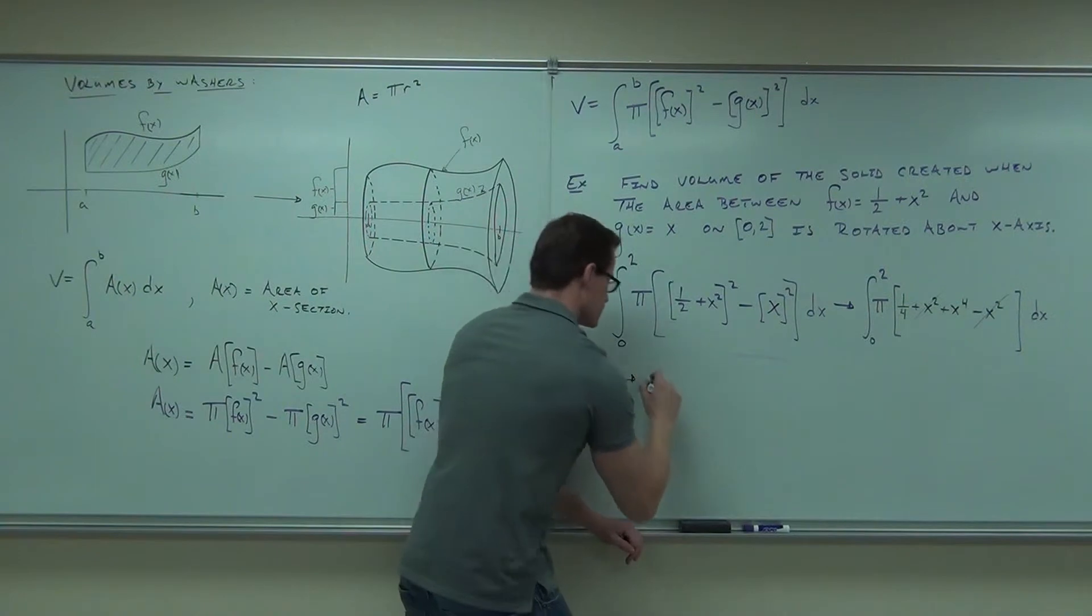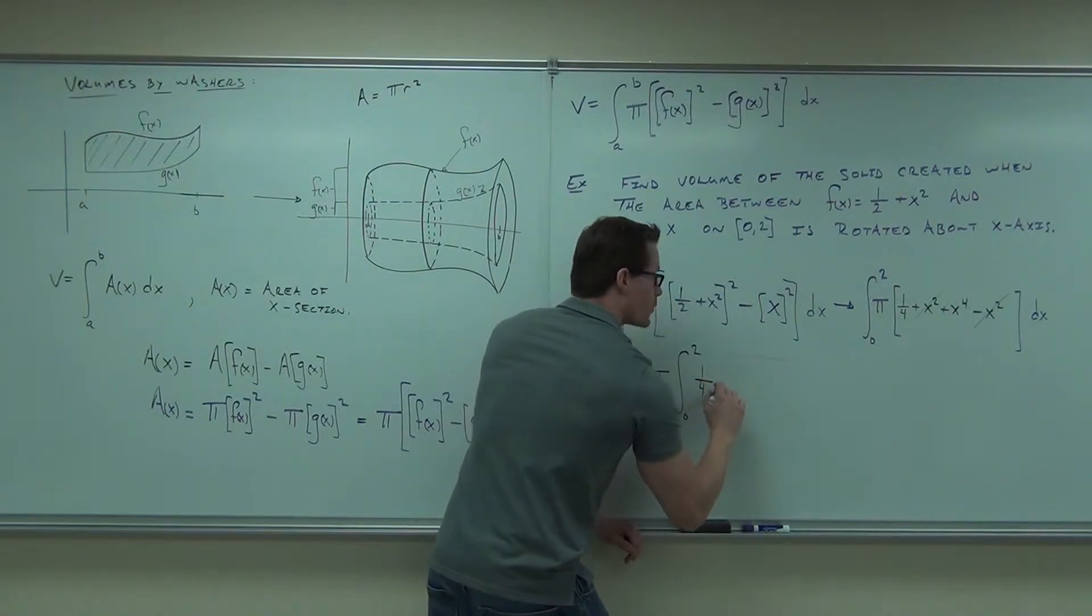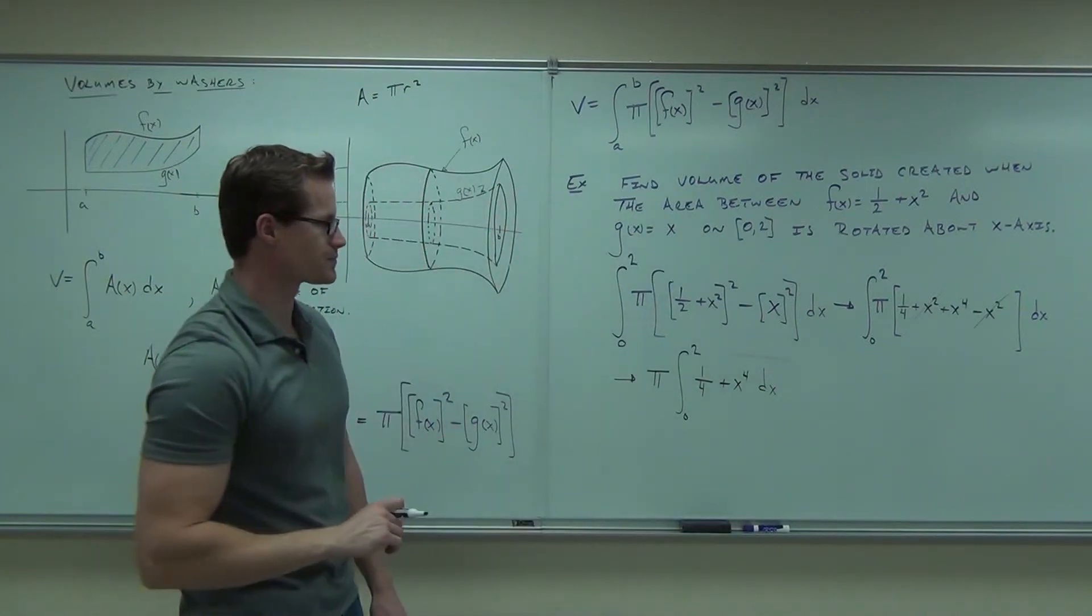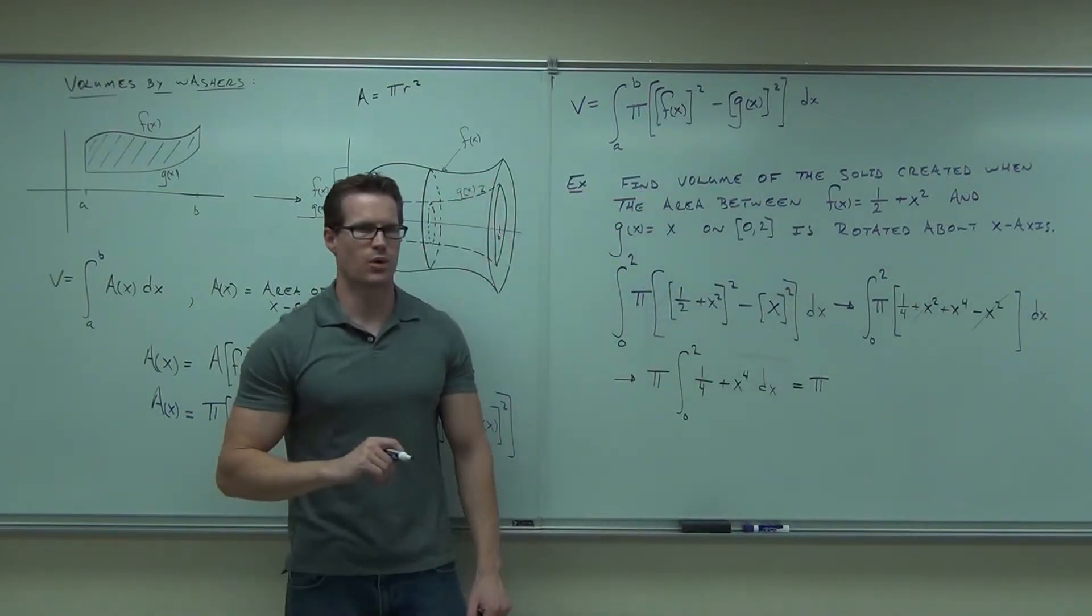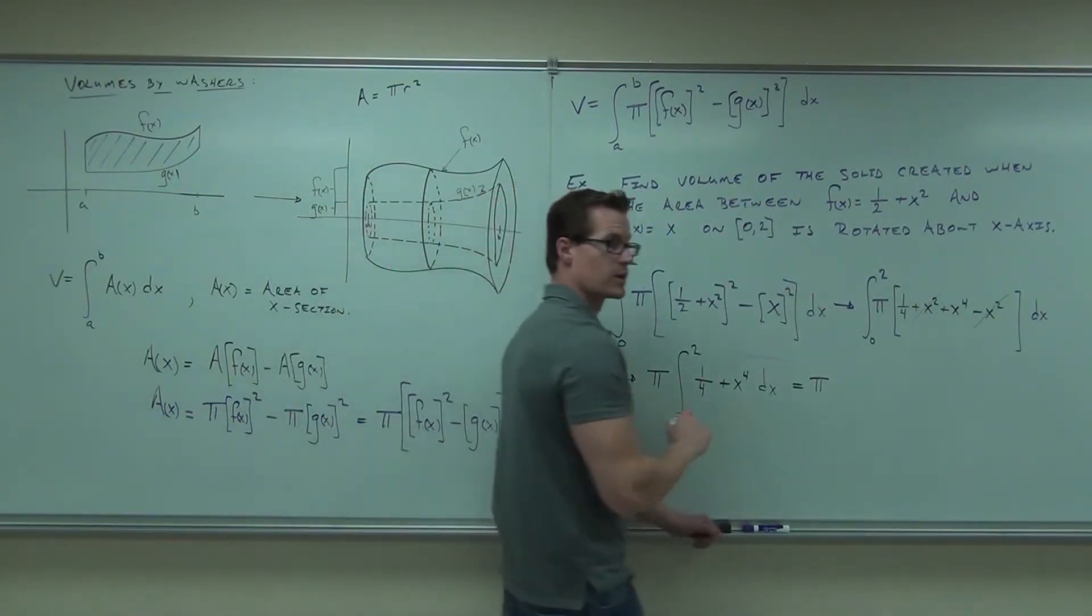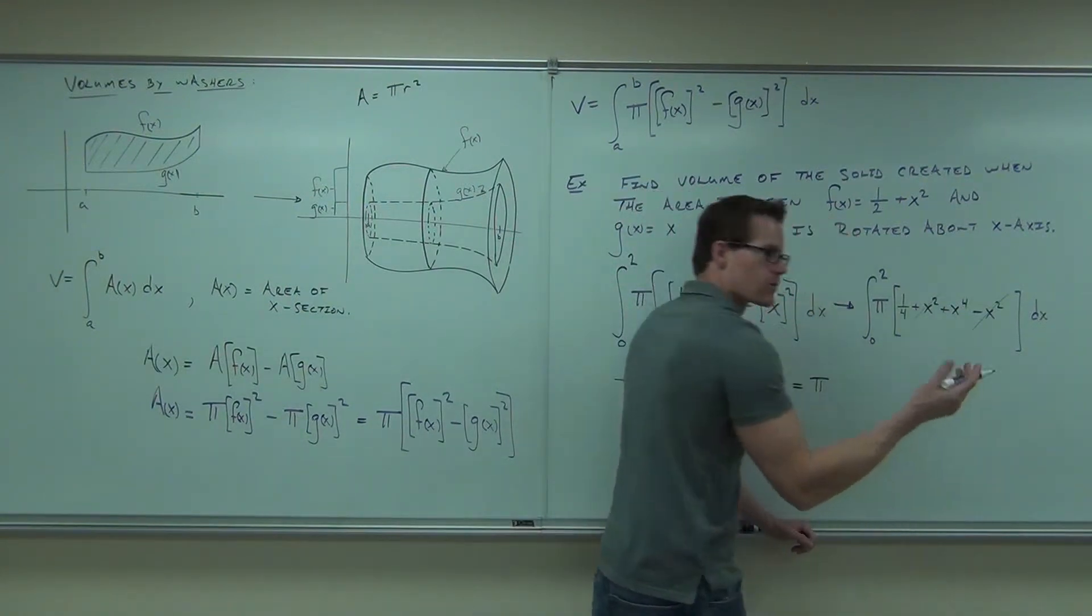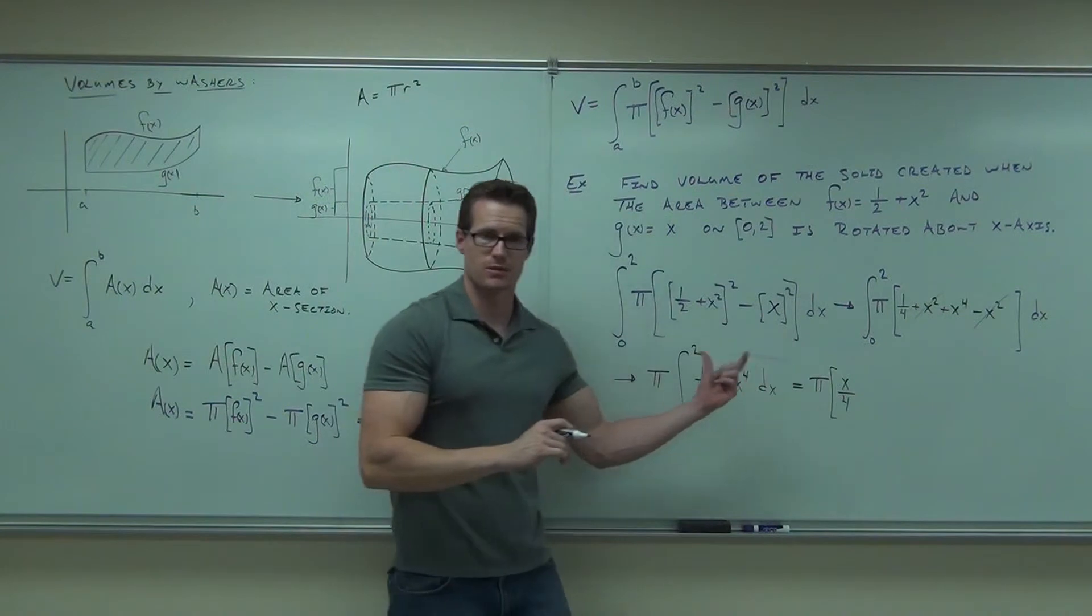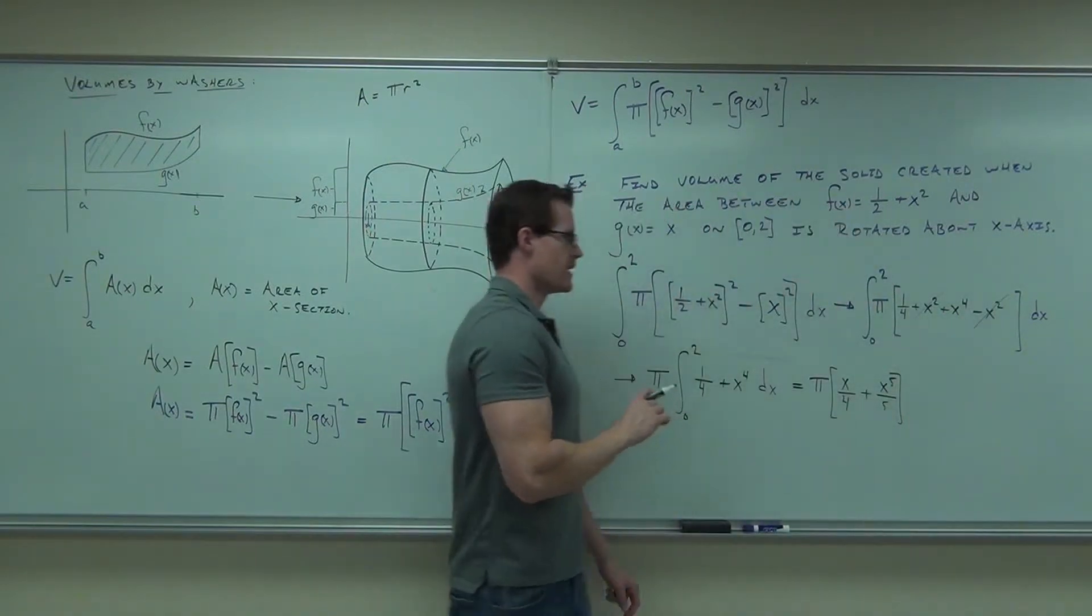What do you say we pull that pi out? We've got zero to two, one-fourth plus x to the fourth, dx. The pi is going to stay there. Can you take your integral of one-fourth plus x to the fourth? What are we going to get? One-fourth x, that's great. Plus x to the fifth over five. It does need to be in parentheses, though. It has to have a bracket. And we'll be evaluating that from zero to two.